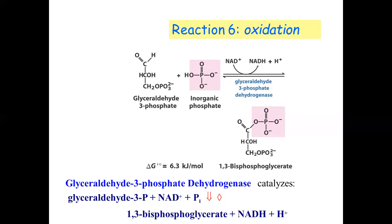The enzyme used here is dehydrogenase. Note the distinction: when a phosphate group is added through ATP, the enzyme used is a kinase enzyme. But here, the oxidation is through simple phosphate — HPO4 — so the enzyme is dehydrogenase.